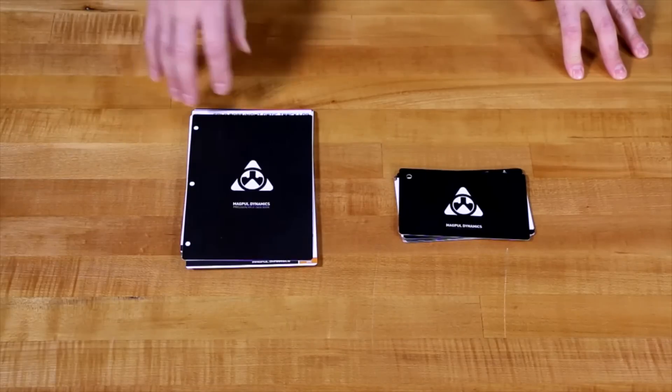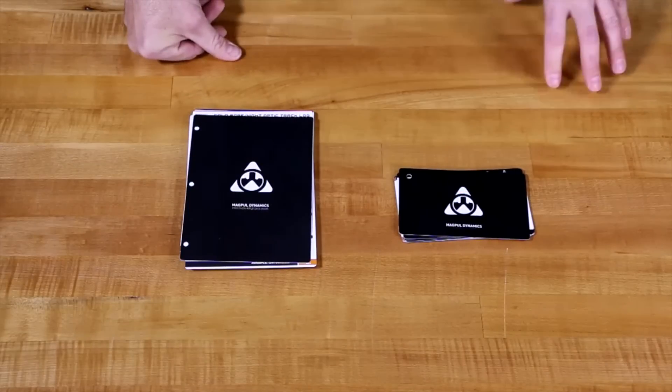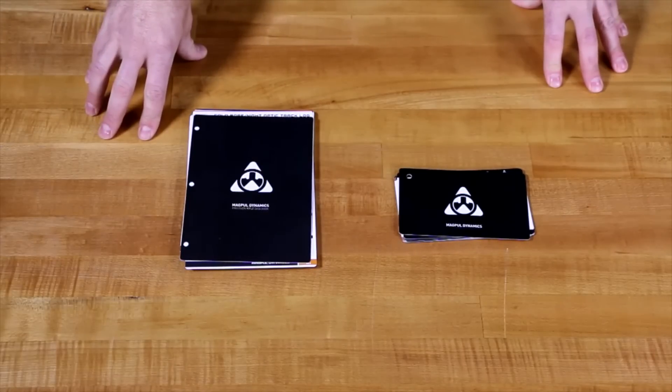The MSRP for the data book is $49.95 and the quick reference cards are $19.95. Both products are currently shipping and available at Magpul.com and through dealers and distributors.